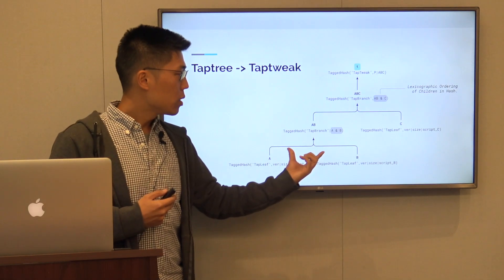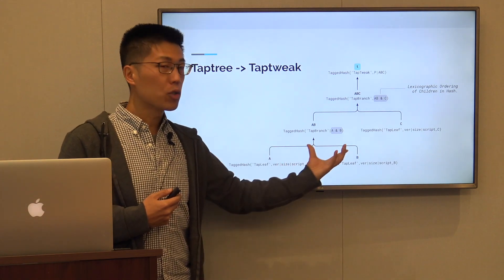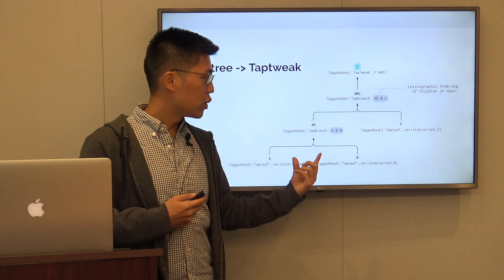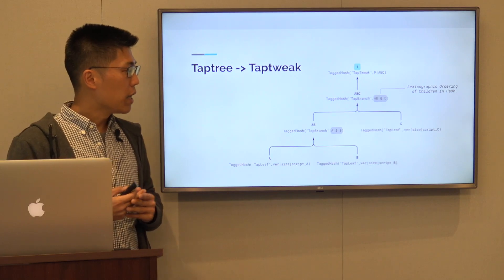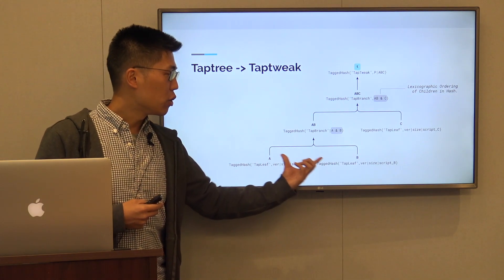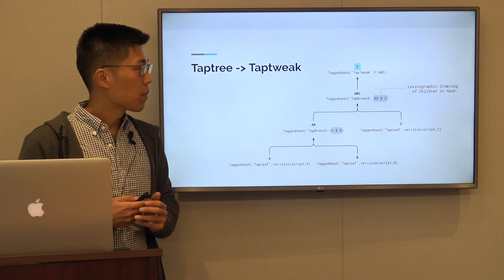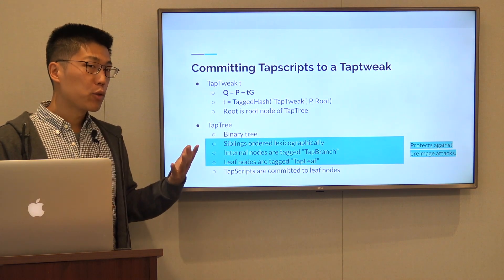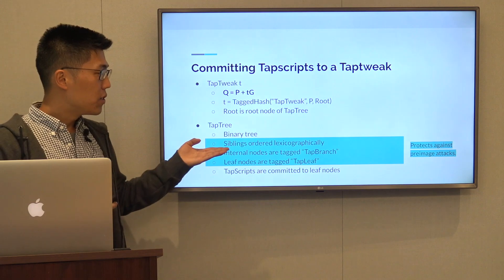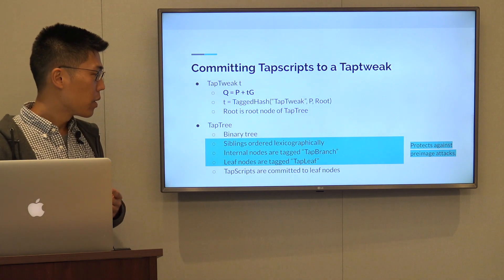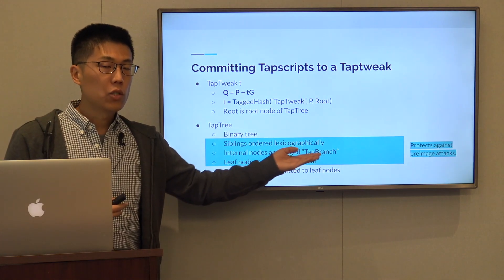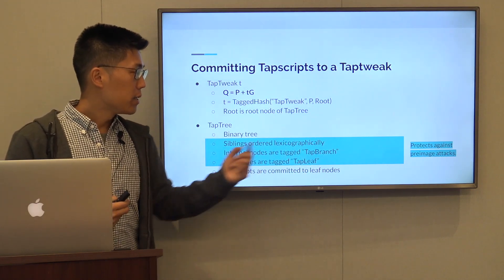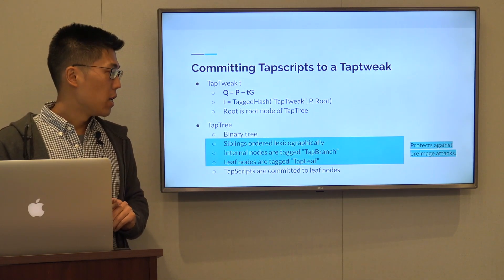One thing to note: the nodes, when hashed from the children of the nodes, the children are ordered lexicographically. So the ordering shown here is for visual purposes only. Similarly, there is actually no ambiguity in terms of how these children are hashed to obtain their parents. In order to commit a TAP tree into a TAP root output, we use binary trees. The siblings are ordered lexicographically, so there's no ambiguity. The internal nodes are tagged TAP branch, so it is always clear whether we're talking about a leaf node — tagged TAP leaf — or an internal node, tagged TAP branch. This removes ambiguity in the Merkle tree.